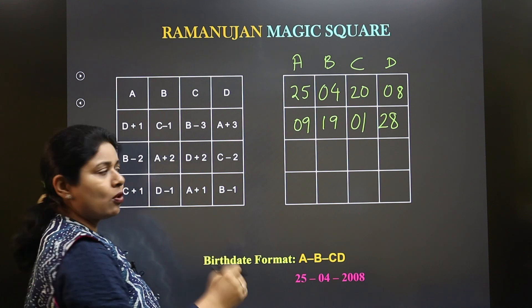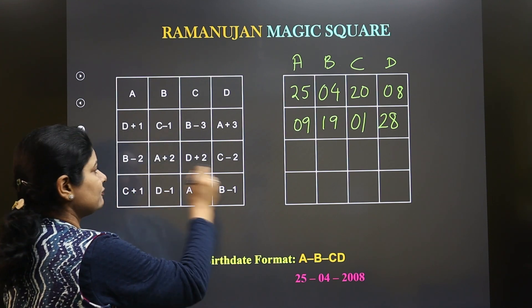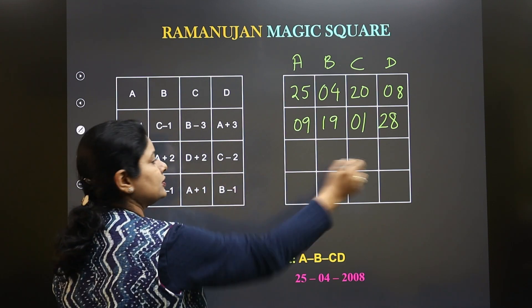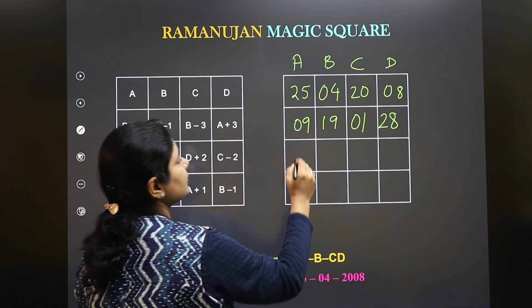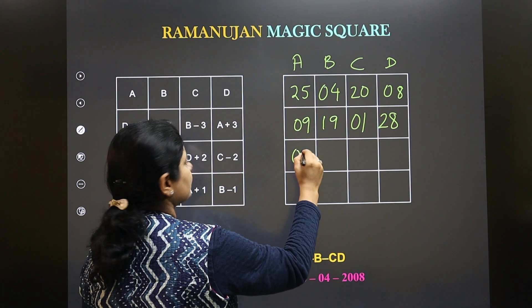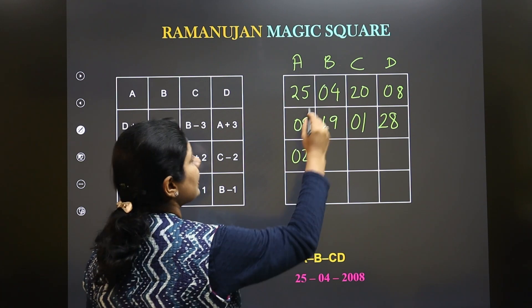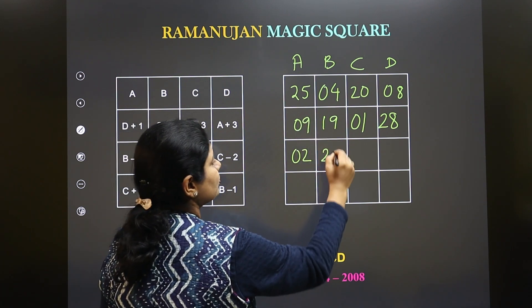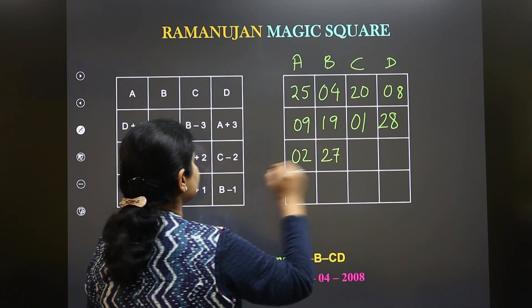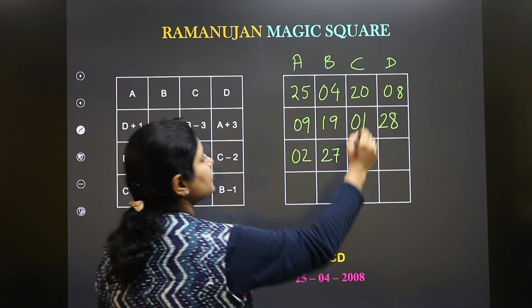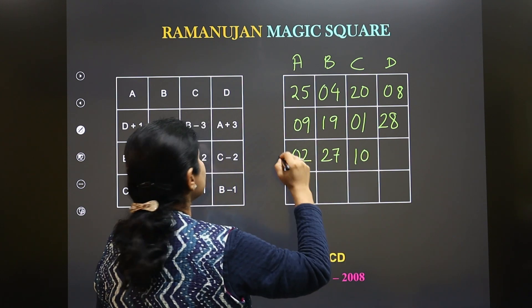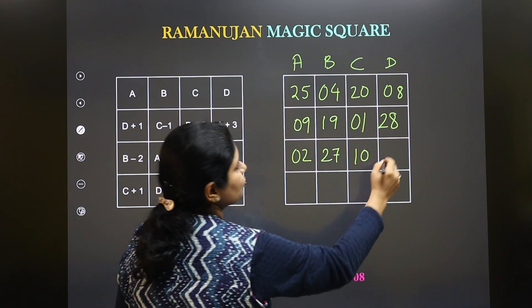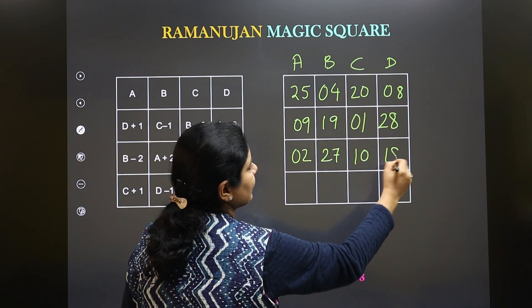Similarly, following the formula for the third row, we get: B minus 2 is 02, A plus 2 is 27, D plus 2 is 10, and C minus 2 is 18.